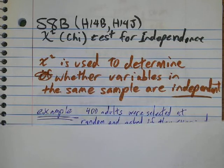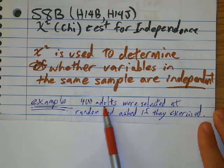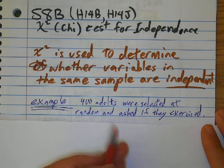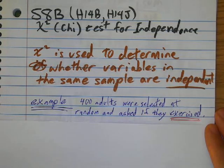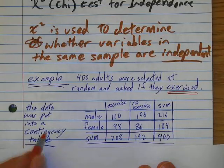So in the example I'm going to work with right now, let's pretend that there was 400 adults. They were randomly selected from some population, and we wanted to ask if they exercised. And so from the data that we collect, we created a contingency table.